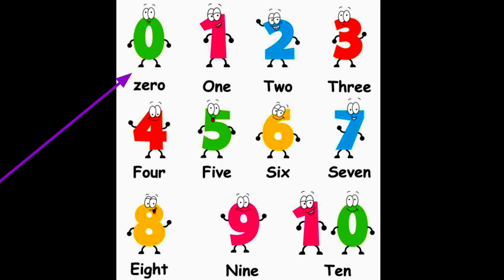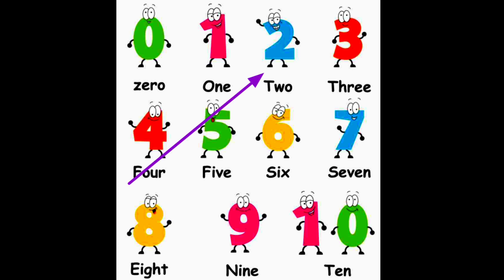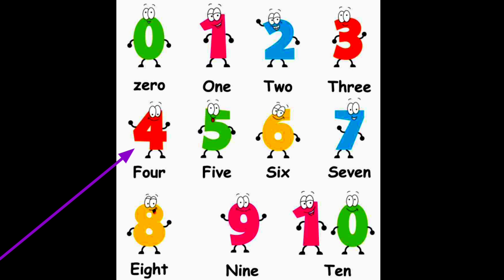0 ZERO 0, 1 ONE 1, 2 TWO 2, 3 THREE 3, 4 FOUR 4, 5 FIVE 5.